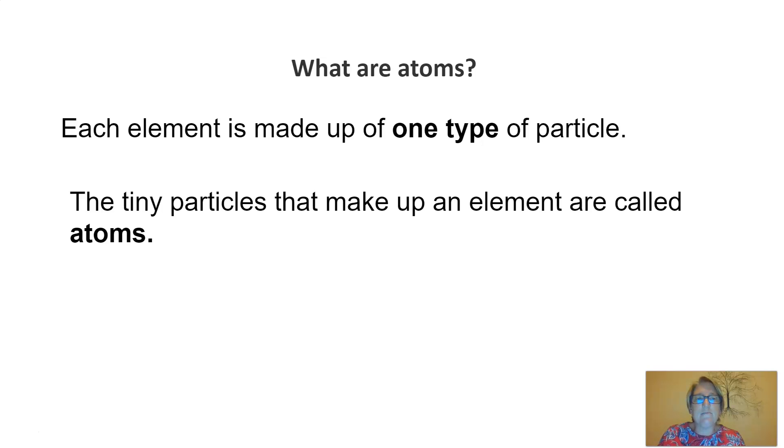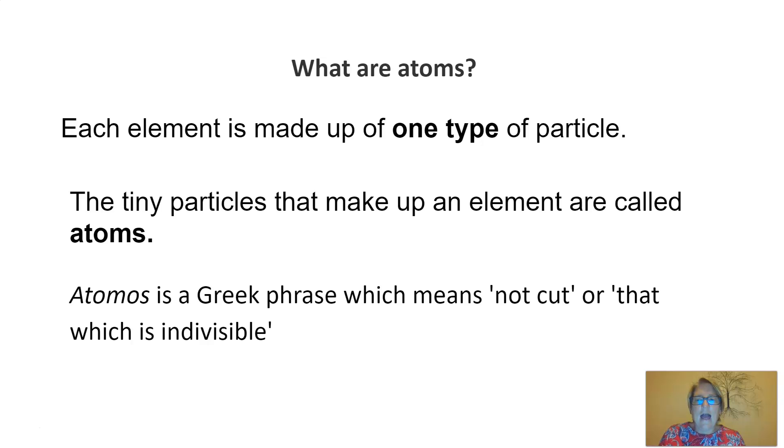Firstly, those are atoms, and each element is made up of one type of particle. The tiny particles that make up an element are called atoms. Atomos is a Greek phrase, which means not cut, or that which is indivisible. That could help you work out why early scientists referred to these tiny particles as atoms.